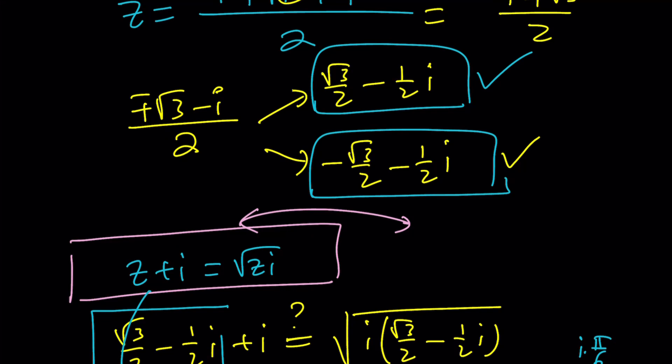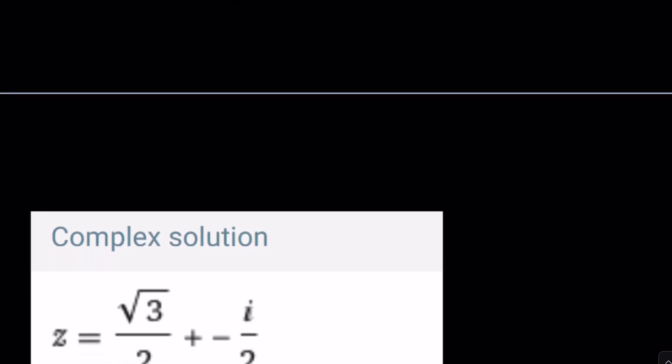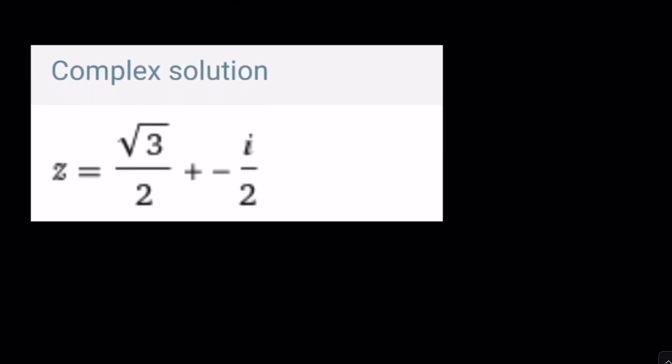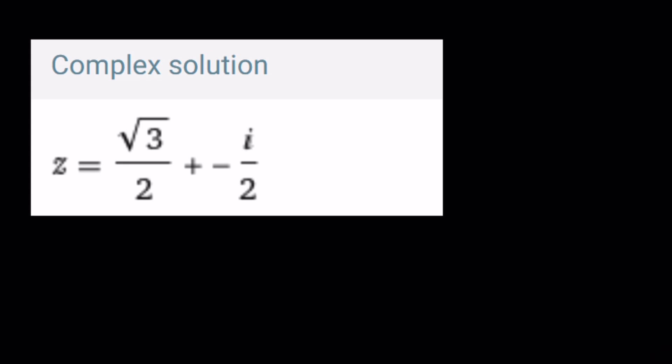But are there any other solutions? Let's check what we get from Wolfram Alpha. Complex solutions - we only get one. Why did we only get one? Why didn't the other solution work? I don't know. Maybe I made a mistake.